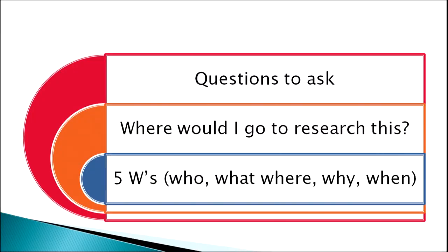There are various questions to ask when we go for the historical method — where would I go to research this? When we are going to research the past, where should I go? There are five W's which we have to take care of: who, what, where, why, and when.